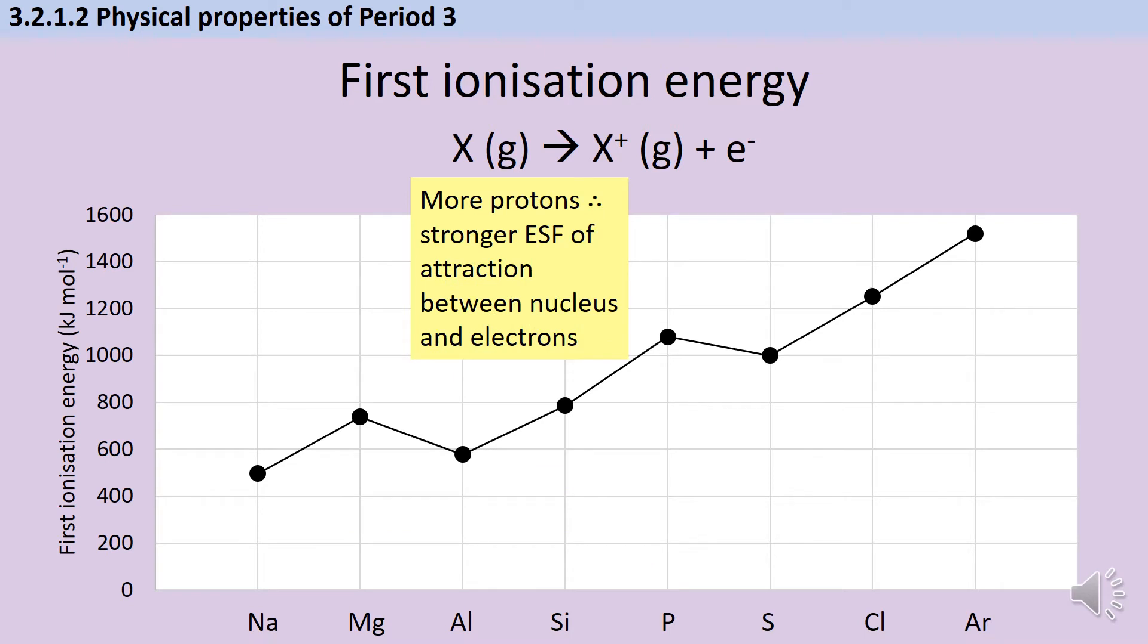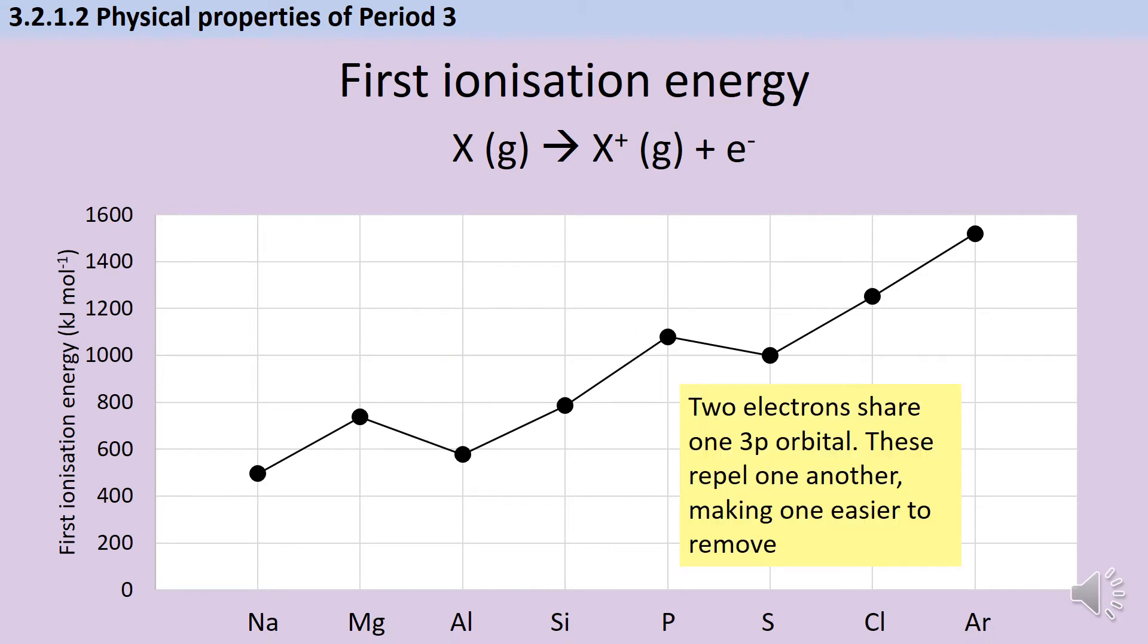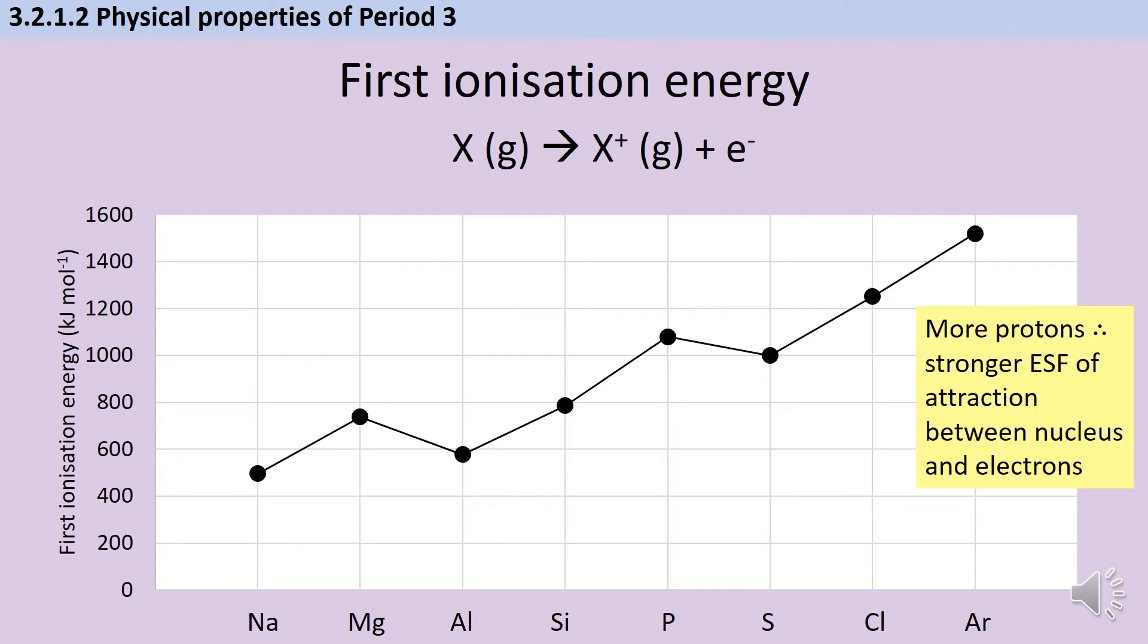For silicon and phosphorus, we again see this general increase in the energy required, due to their increased nuclear charge. And then when we get to sulphur, we again see a dip. Until this point, the first three electrons to go into the 3P subshell have had a whole orbital each, because of course they're all negative, so they're all repelling one another, so they'll stay as far apart as possible. With sulphur, the first of the 3P electrons needs to pair, and of course those electrons that are paired are still repelling each other, and that repulsion makes it slightly easier to remove the latest 3P electron. And then again, for chlorine and for argon, more protons means a higher nuclear charge, therefore a stronger electrostatic force of attraction between the nucleus and the outer shell electrons, and therefore more energy is required to remove that electron.